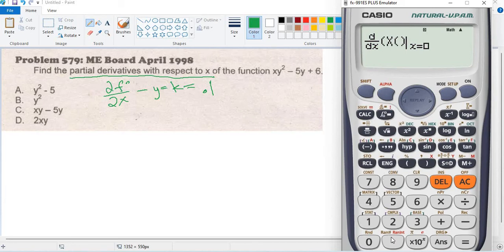0.1 squared minus 5 times 0.1 plus 6. Verify first.